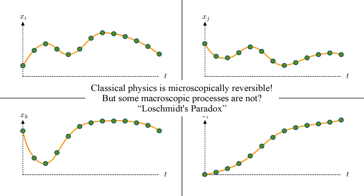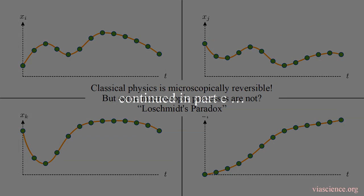This is known as Loschmidt's paradox, and it was a great puzzle for physicists in the late 19th and early 20th centuries.